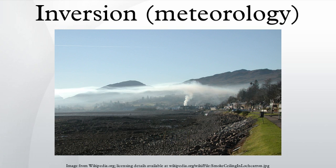The shock wave from an explosion can be reflected by an inversion layer in much the same way as it bounces off the ground in an air burst, and can cause additional damage as a result. This phenomenon killed three people in the Soviet Rhodes 37 nuclear test when a building collapsed.